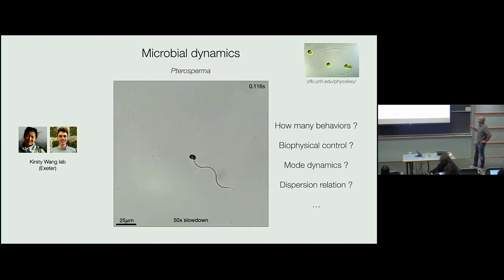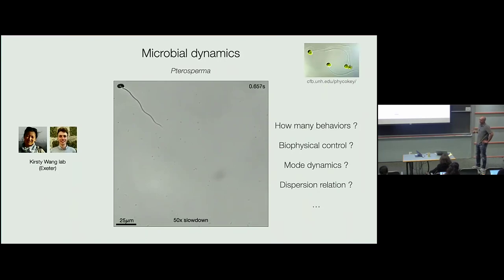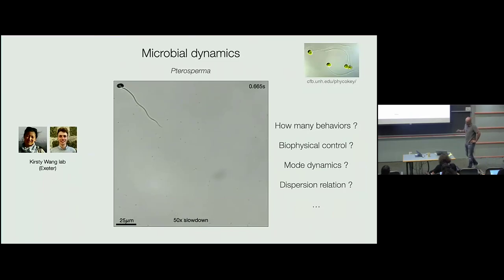This is pterosperma, a green alga. It has several cilia forming a bundle, and you see this wavy motion. This data was taken by Alex Morgan in Kirsty Banks' lab at Exeter University. Something clearly changes in the dynamics — it's quite remarkable for a single-cell organism that can exhibit various behaviors. One key question that Kirsty and Alex asked us is: how many behaviors do we see in that video? And how can we find a good way of classifying those behaviors? The biophysical questions include how transitions between behaviors are controlled, what the dynamics are, and whether we can infer a dynamical system for these modes.